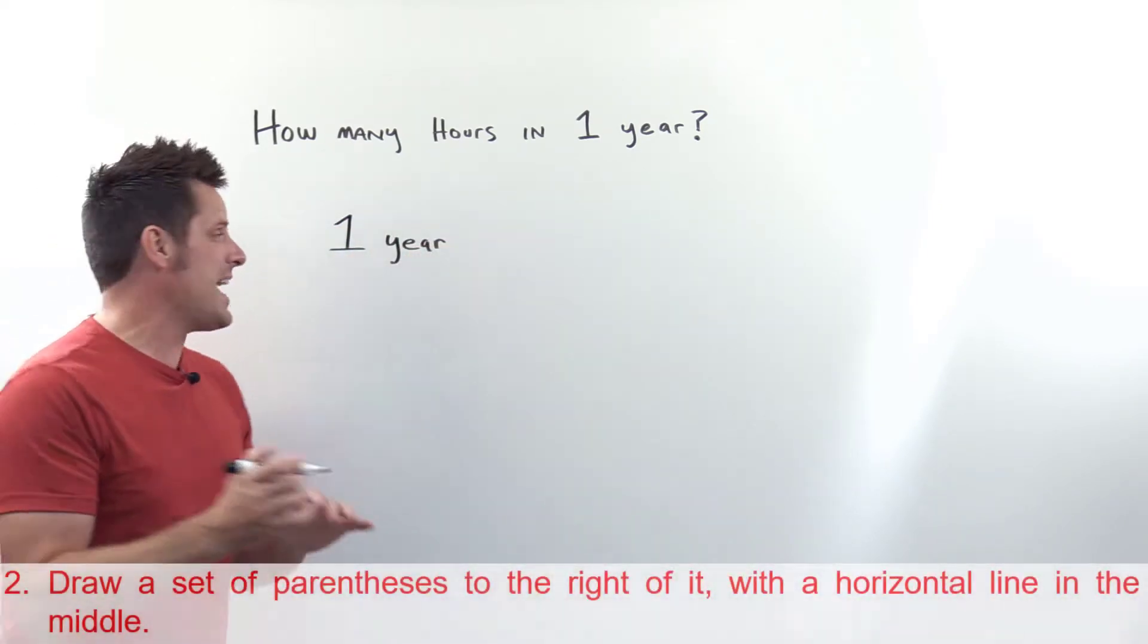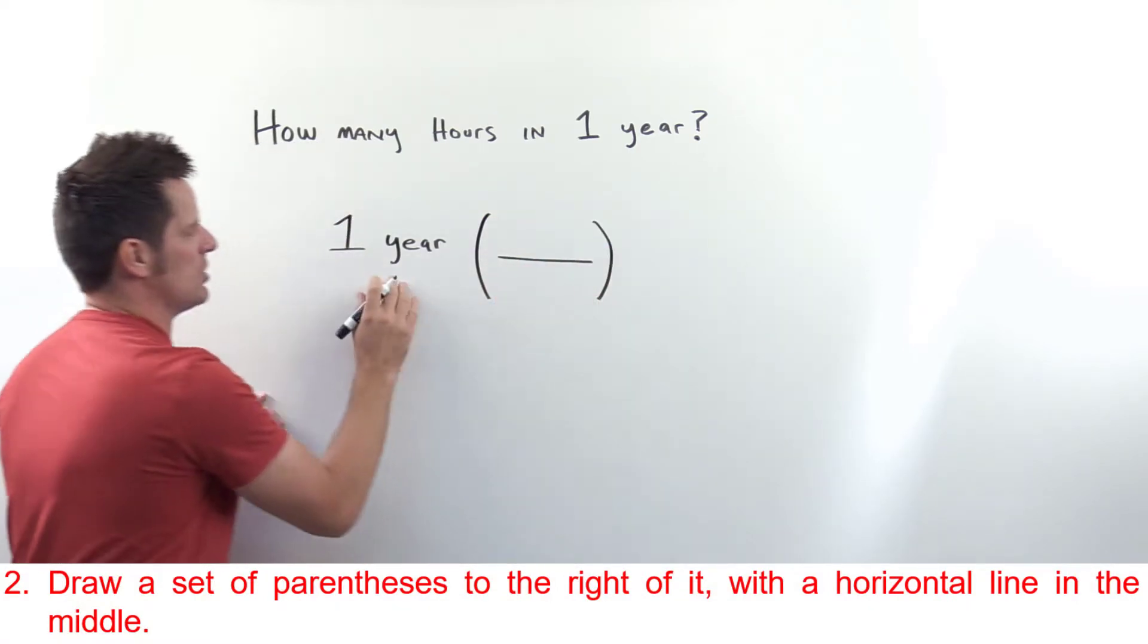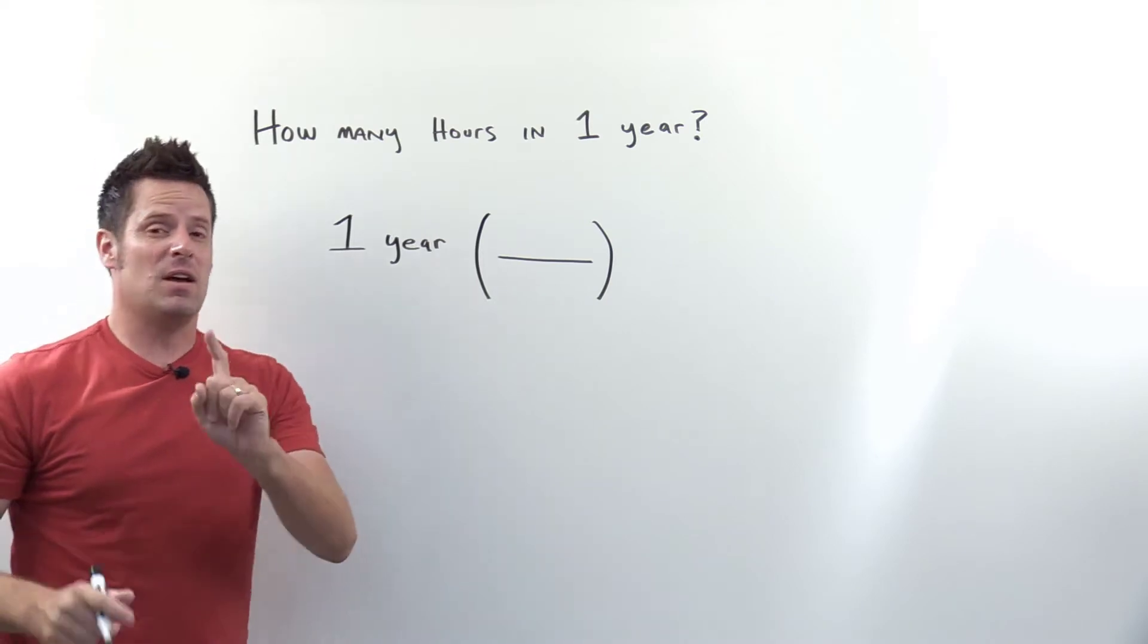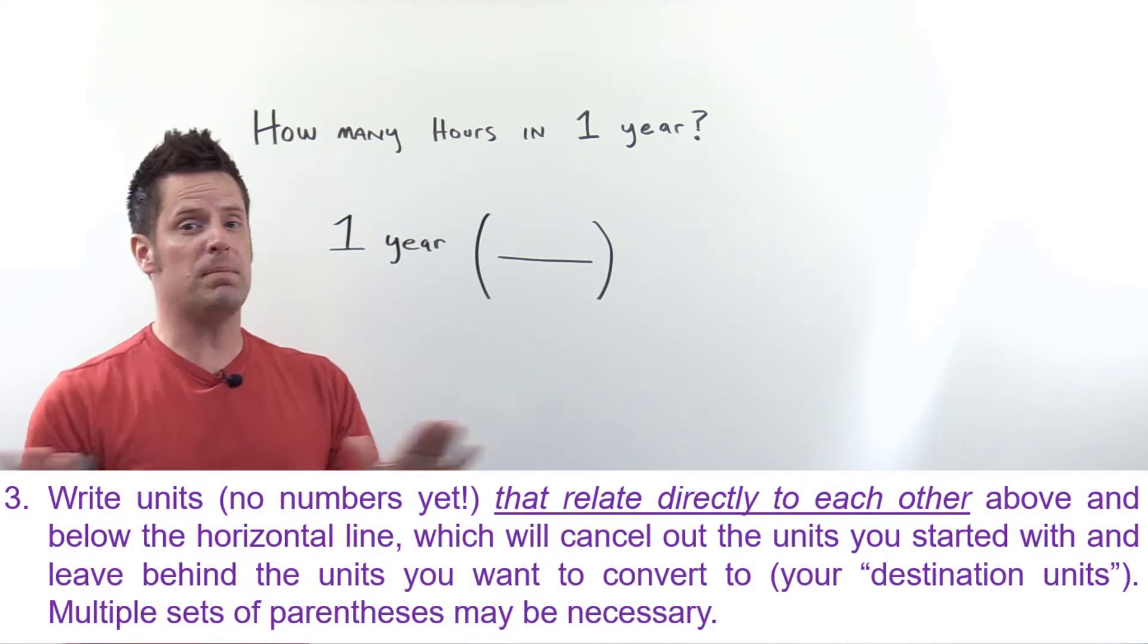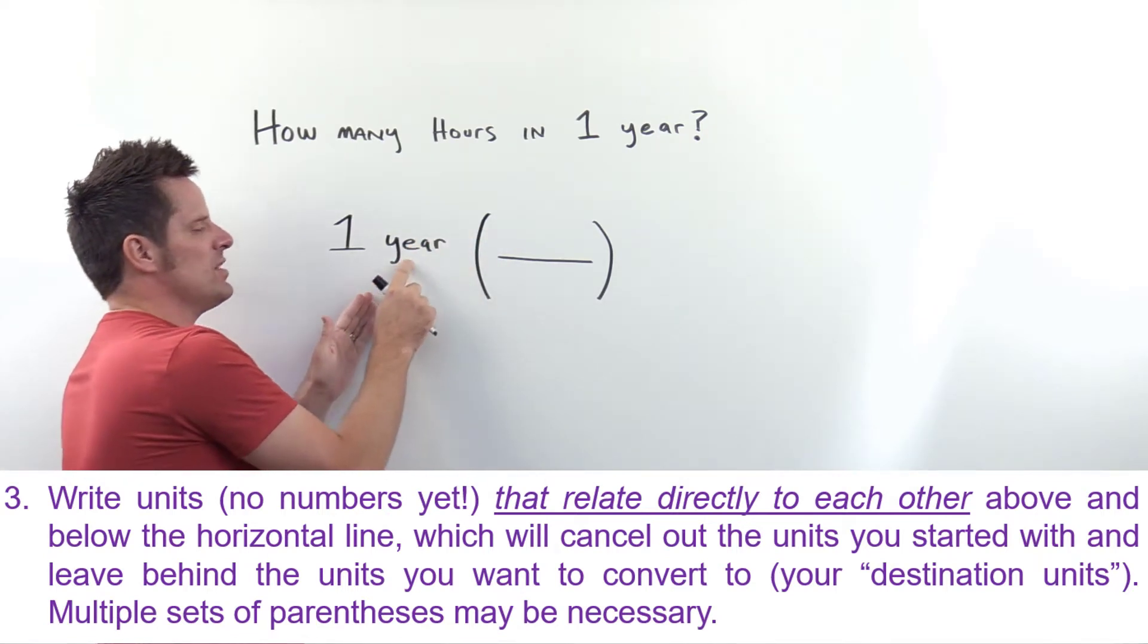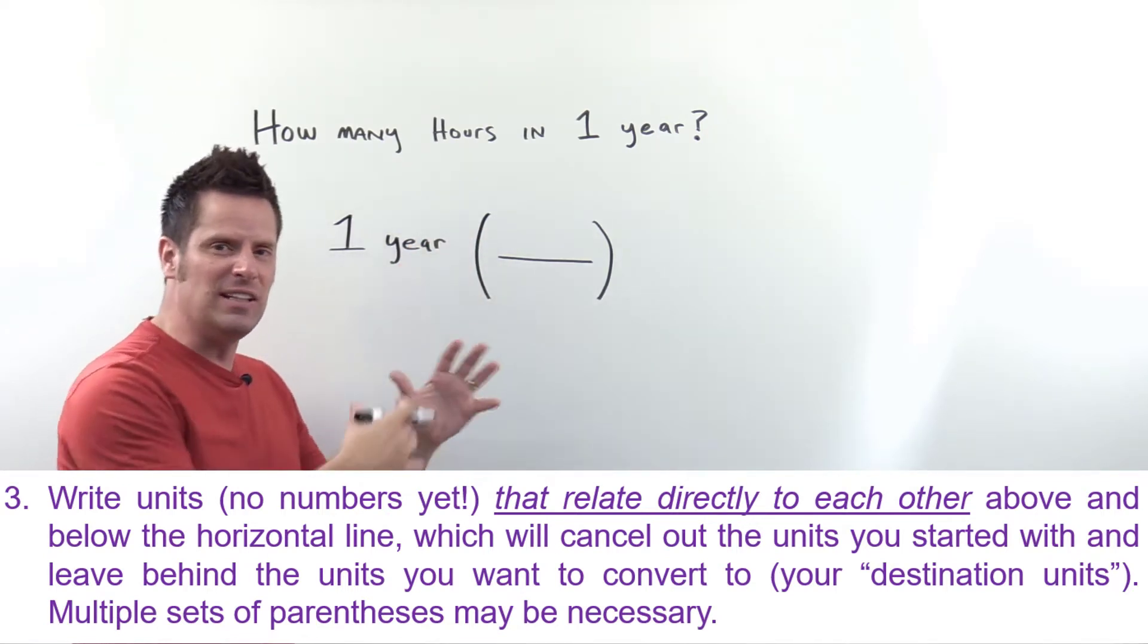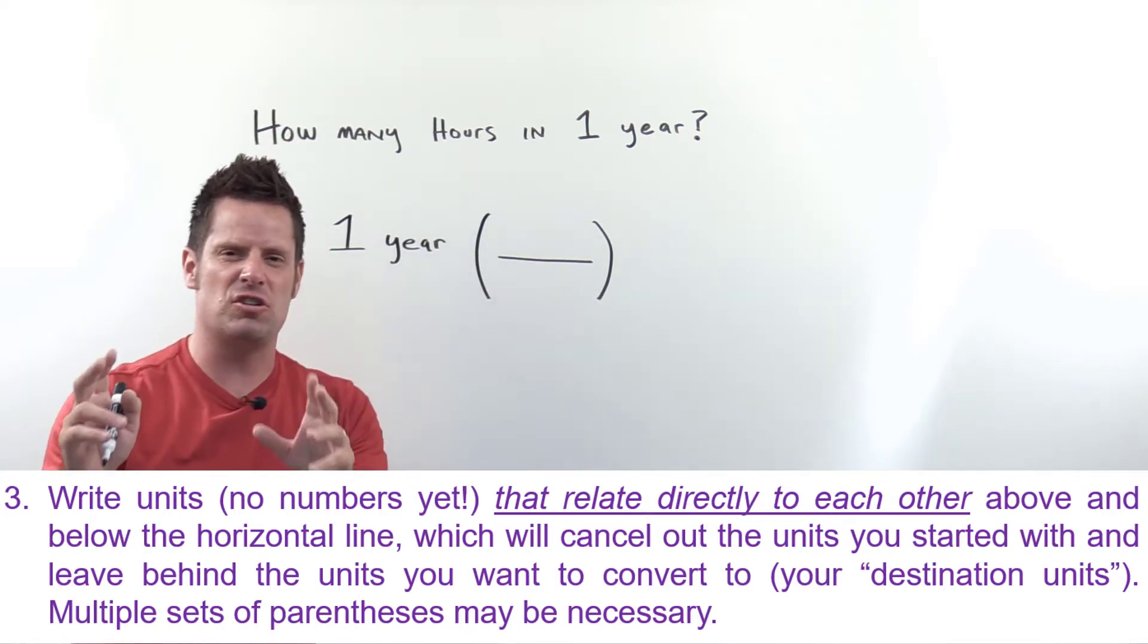Step two is to write a set of parentheses to the right of the term you just wrote down. Now step three: write down units—no numbers yet—inside the parenthesis that will cancel out the units you start with and eventually get to the units you're trying to reach, the destination units.